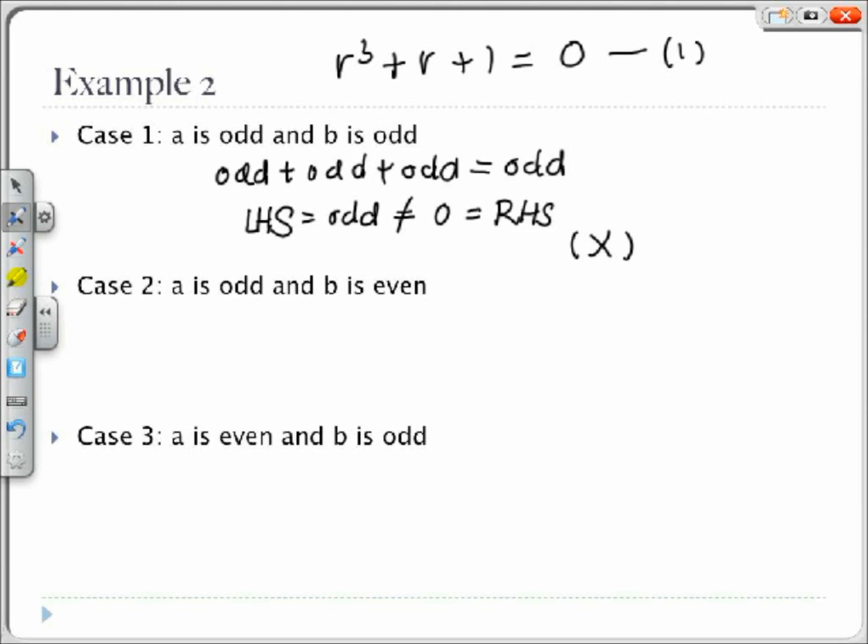For our case 2, we have that a is odd and b is even. So we get an odd plus an even plus an even on the left hand side, which is odd, which is not equal to 0. Therefore case 2 can also not be the case.